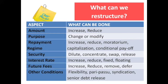With security, you can dilute, concentrate, swap, or release a security. Interest rates can be increased, reduced, or changed from fixed to floating or floating to fixed. Future fees can be increased, reduced, removed, or deferred. Other conditions may provide more flexibility — you can introduce a pari passu arrangement where, if the bank cannot give you additional funding but your security value is well in excess of minimum requirements, you can bring in another lender and the two lenders share that security. You can also consider syndication and senior debt release.